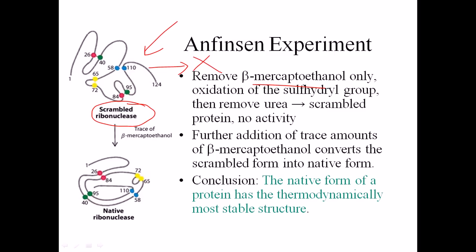This scrambled ribonuclease showed no activity. Why? Because removing beta-mercaptoethanol enables the SH-containing amino acids to form disulfide linkages with each other, but since urea was not removed, the protein structure is frozen in a scrambled state. However, if a trace amount of beta-mercaptoethanol is then added, the scrambled ribonuclease suddenly acquires proper structure and becomes fully active, like the original native ribonuclease.